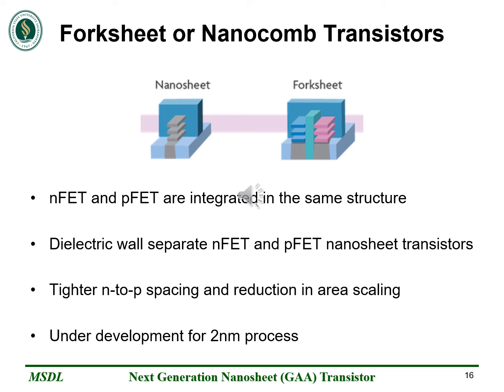Before the roadmap, let's take a sneak peek at other future transistor designs. The first is the Forksheet or nano-comb transistor design, which is an improved version of the nano-sheet transistor. NFET and PFET are integrated in the same structure but separated by a dielectric wall. This tightens the space between NFET and PFET, reducing area scaling further. They are the tentative design for the 2nm process.